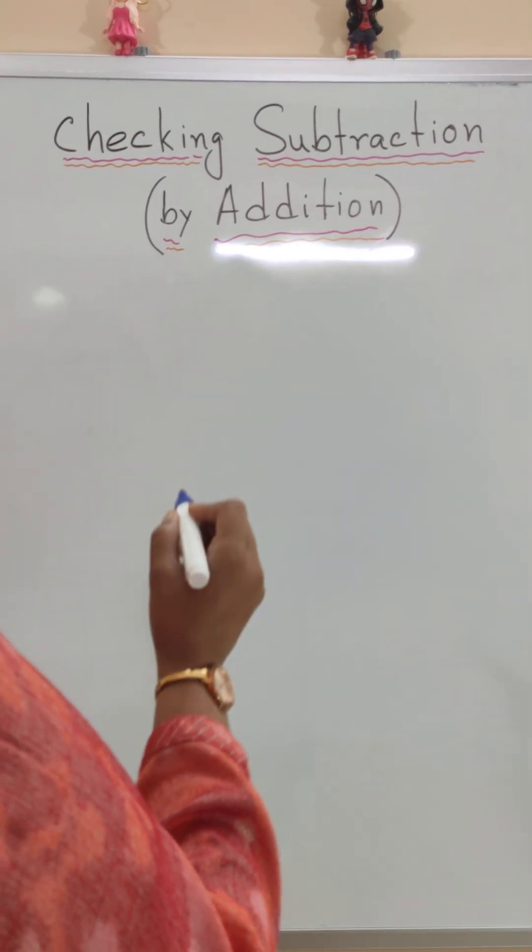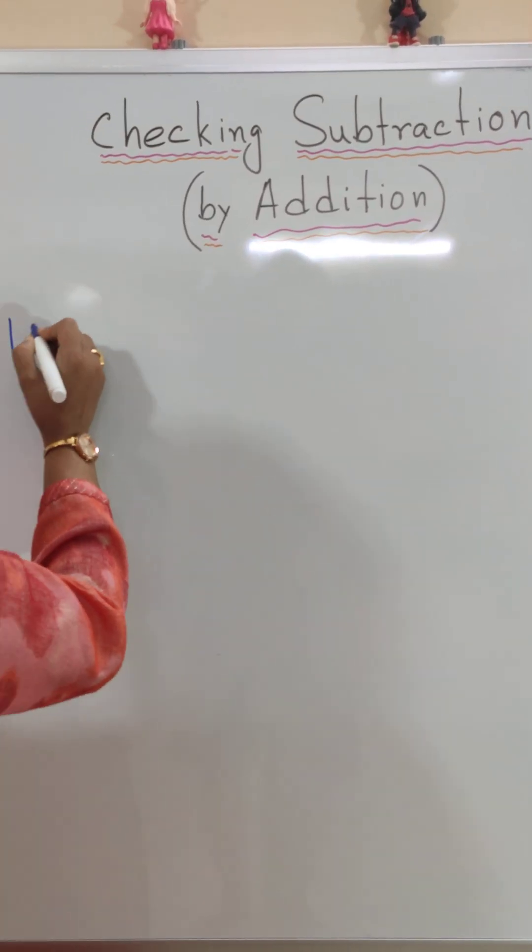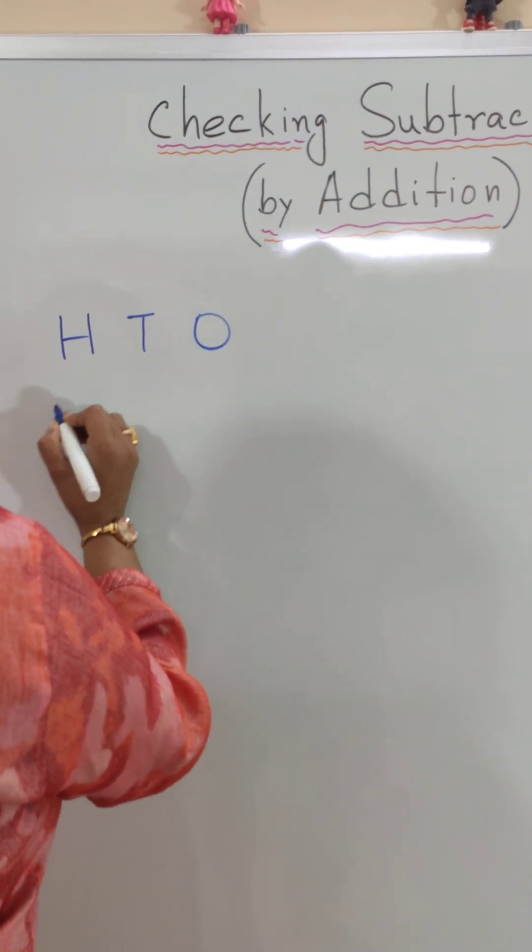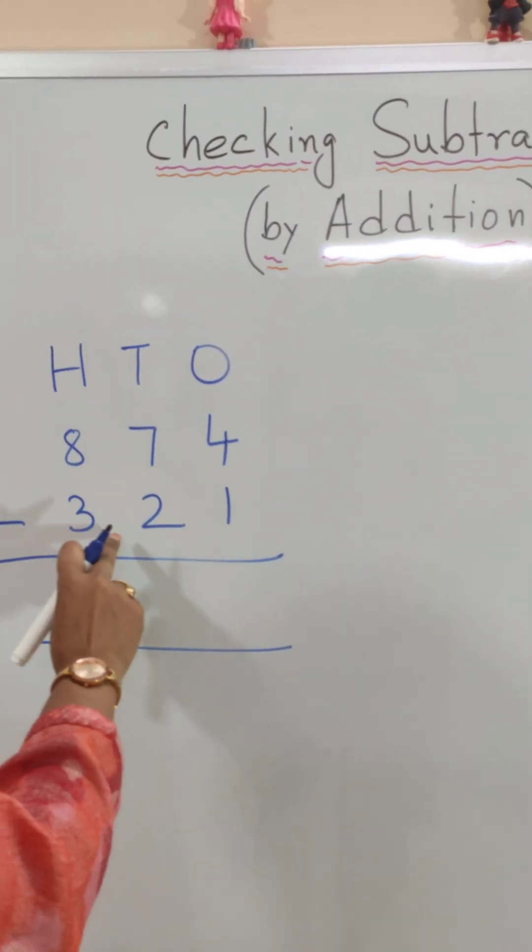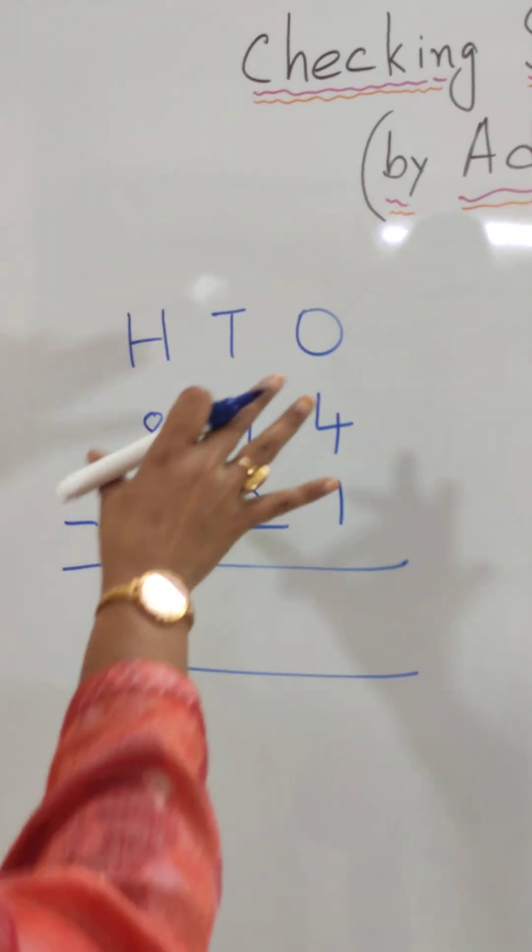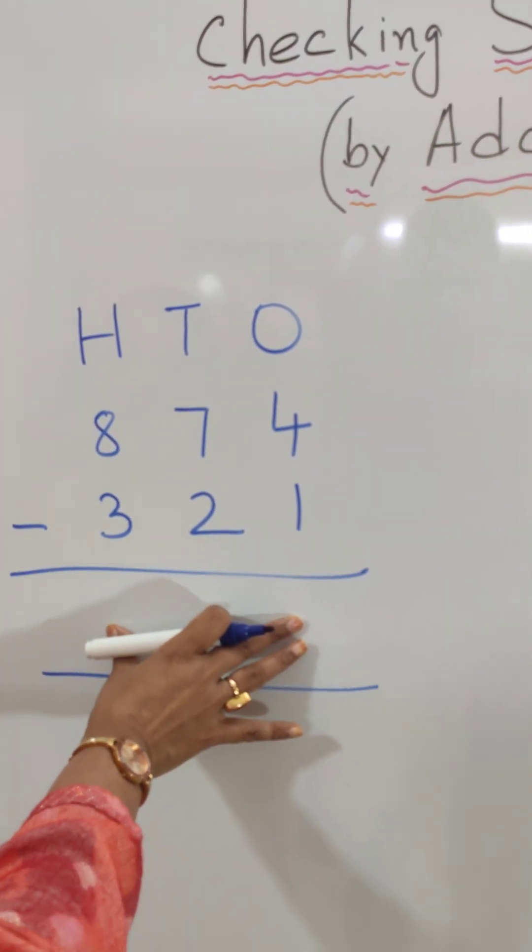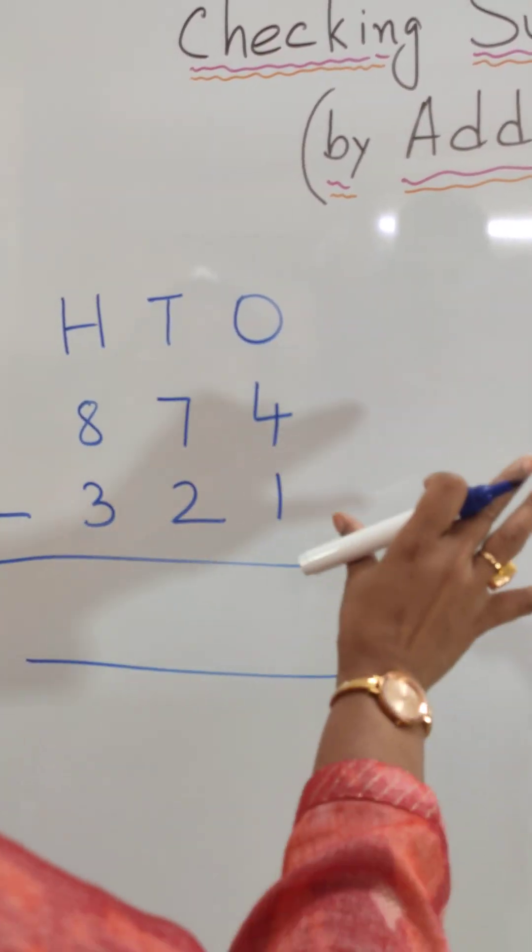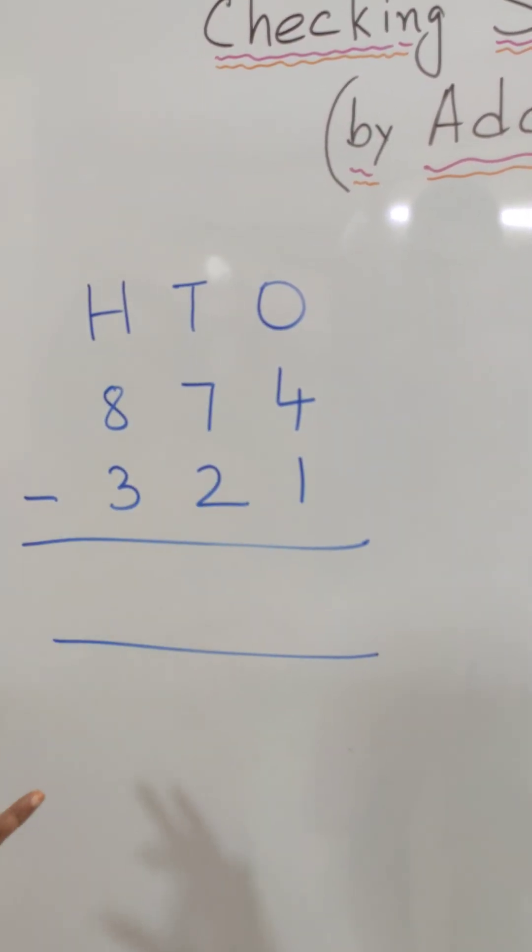Today we will learn checking subtraction by addition. Let me first give you a subtraction. 874 minus 321. We will subtract this and then we will see how we will check the answer by doing addition.